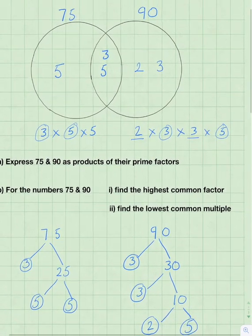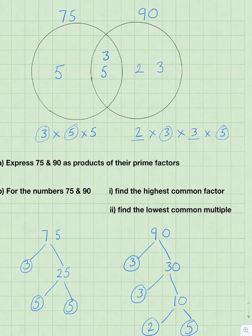Now, the highest common factor will be the numbers in the intersection just here multiplied together. So the highest common factor is 3 times 5, which equals 15.